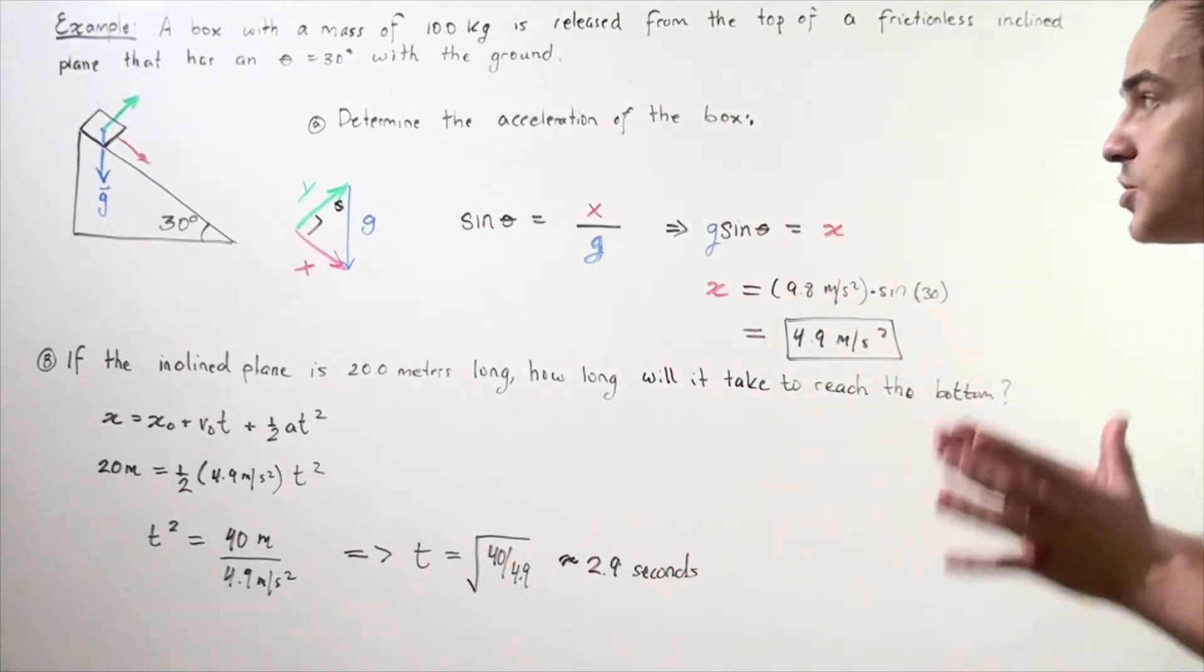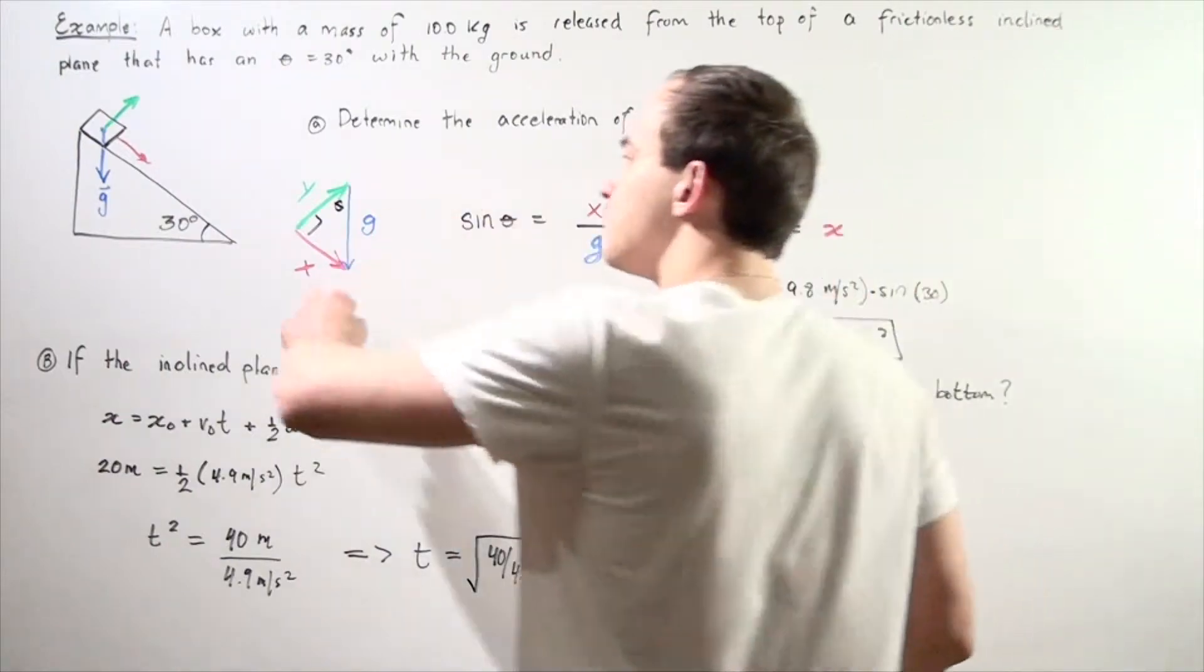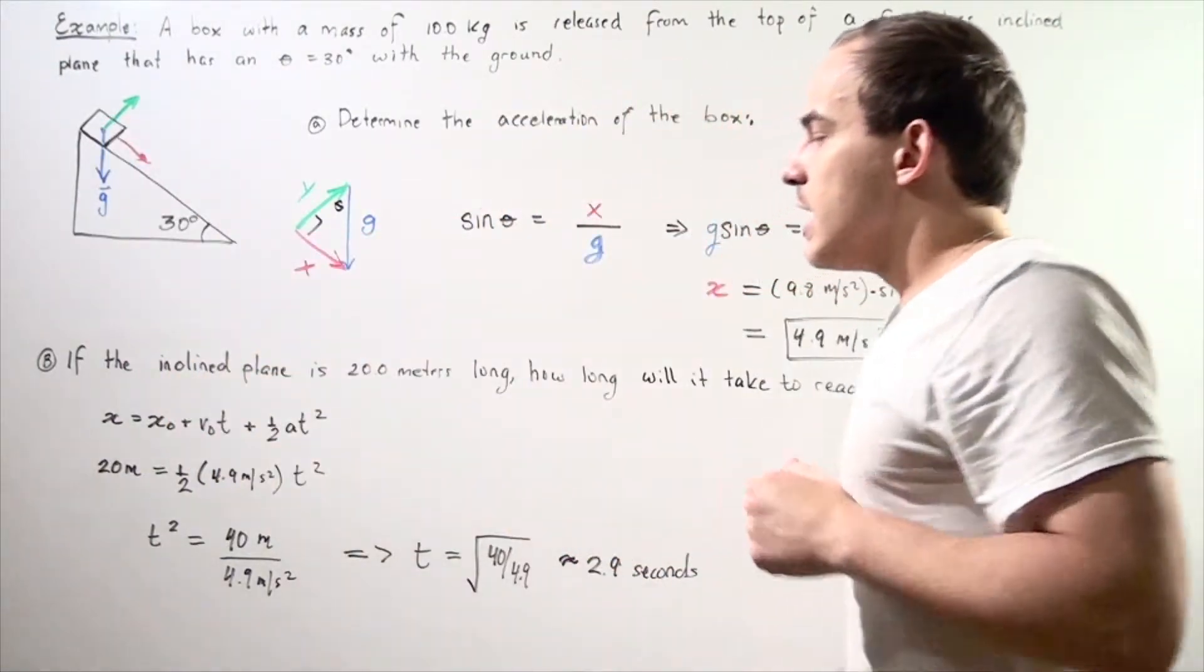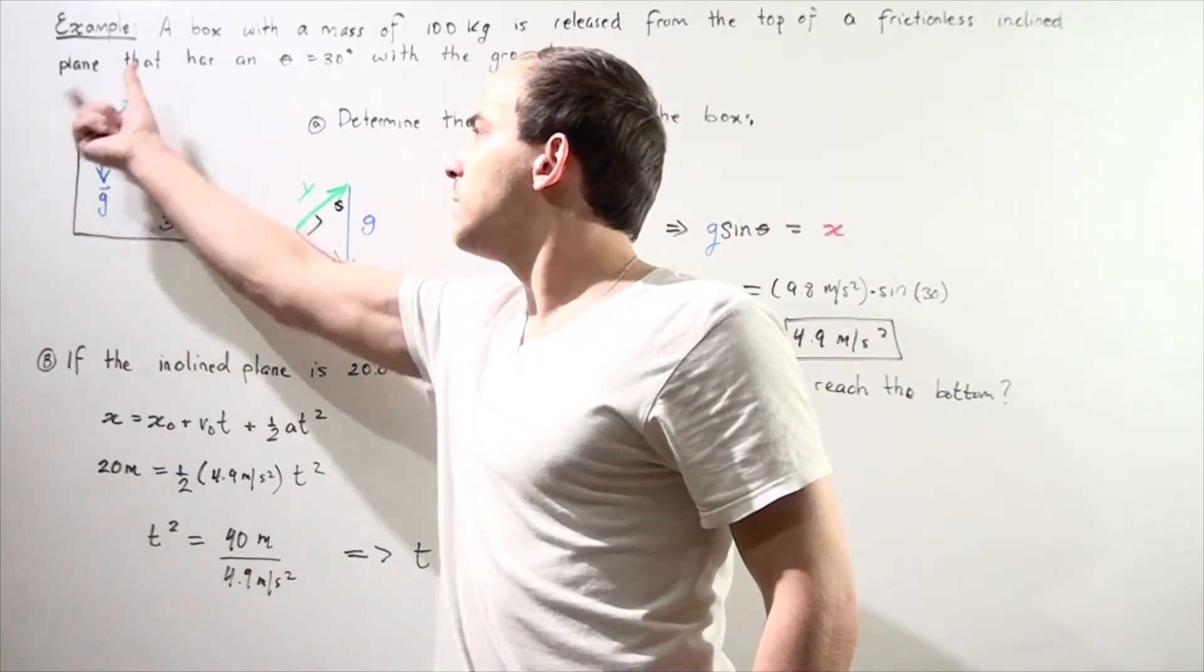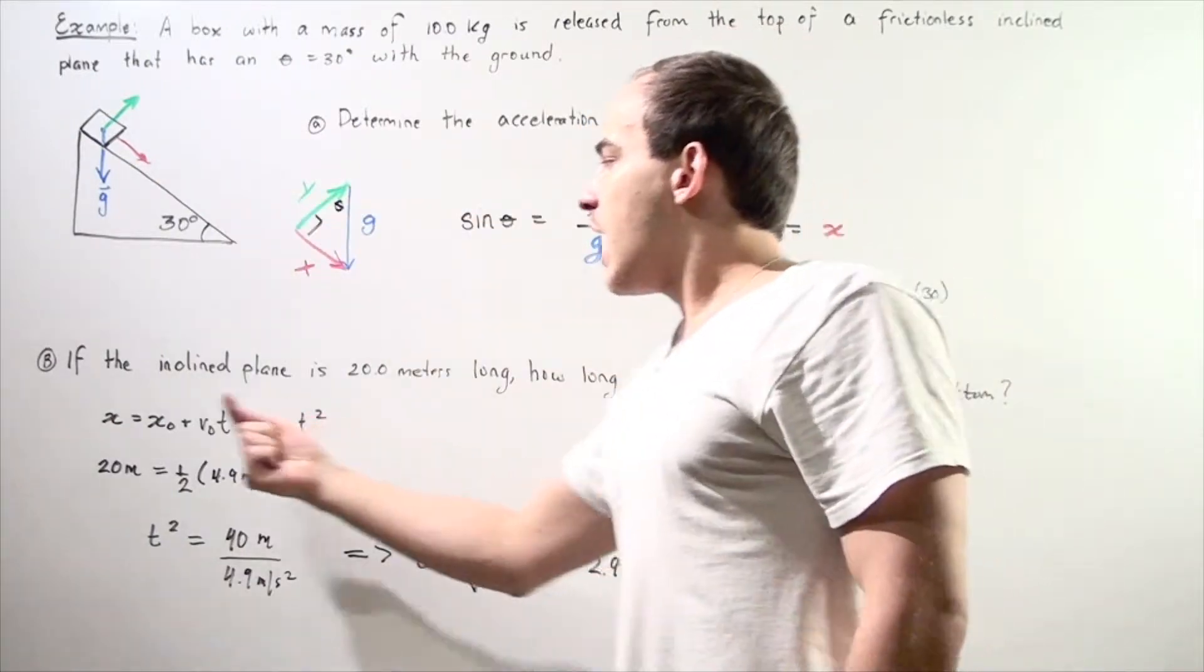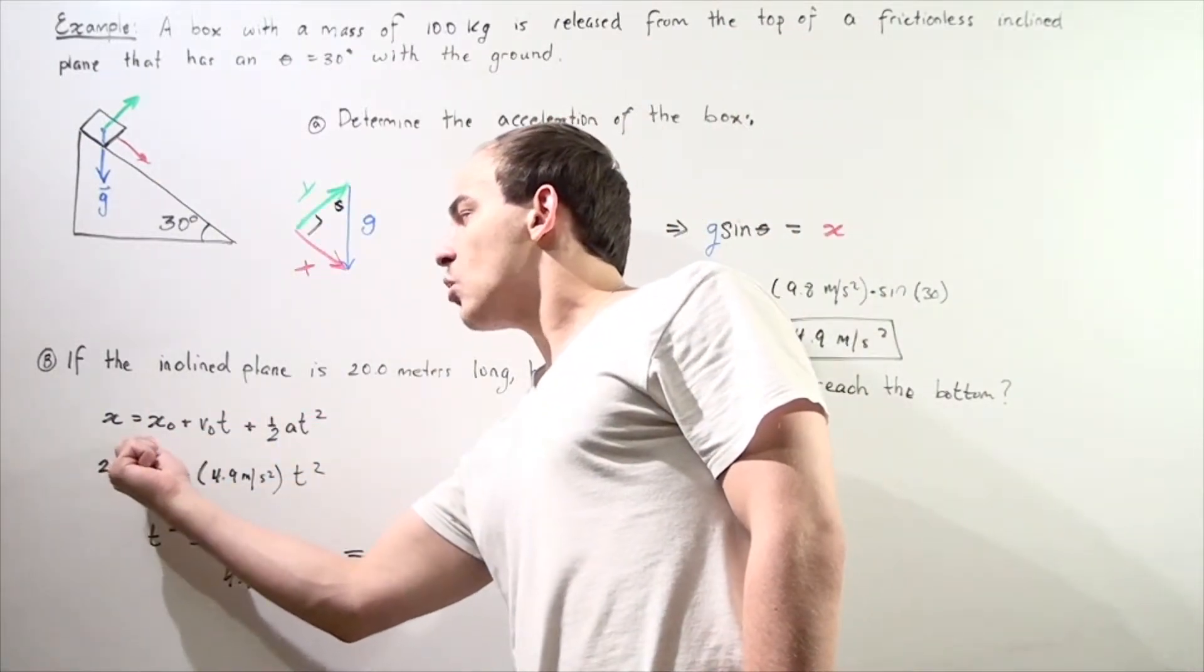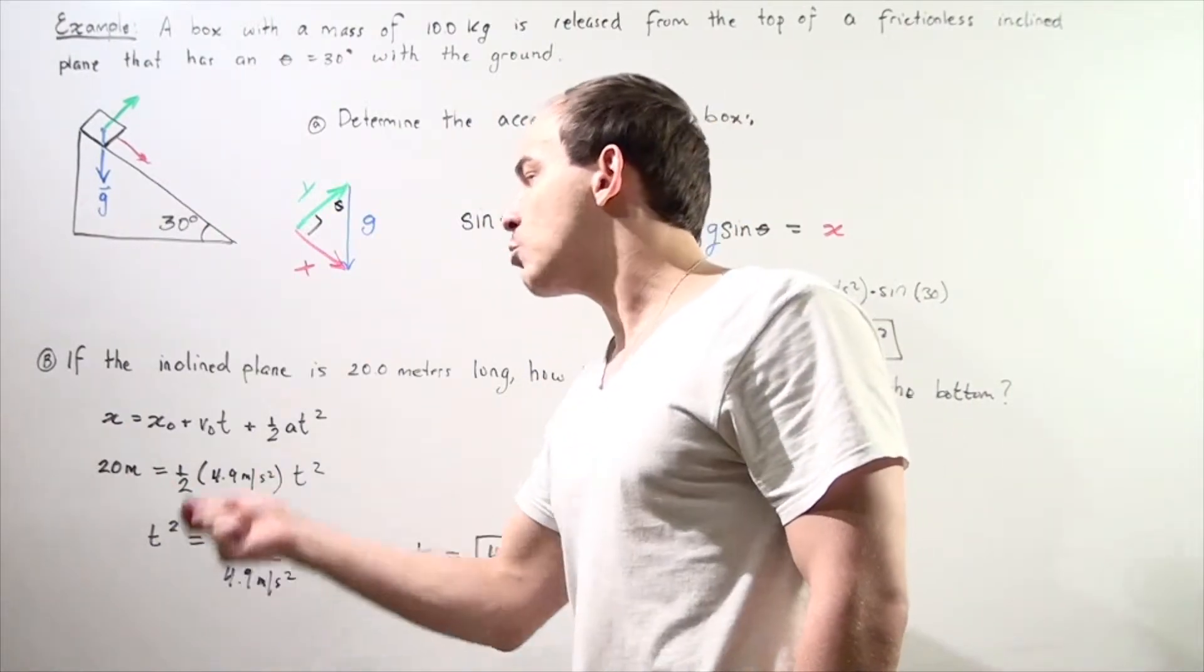We're making the assumption that our acceleration is constant, of course, and that our surface is frictionless. So, we choose our initial x to be 0 at this point, where our block begins, and the final to be at this point. So, the initial is 0 and the final is 20 meters. So 20 meters equals 0 plus...